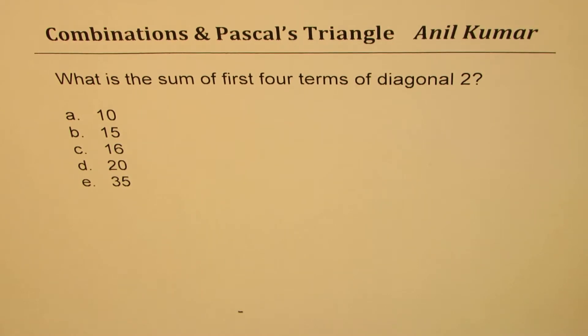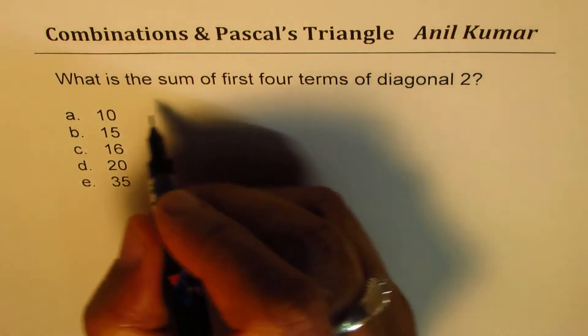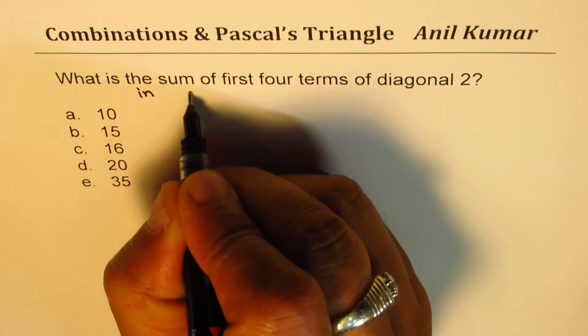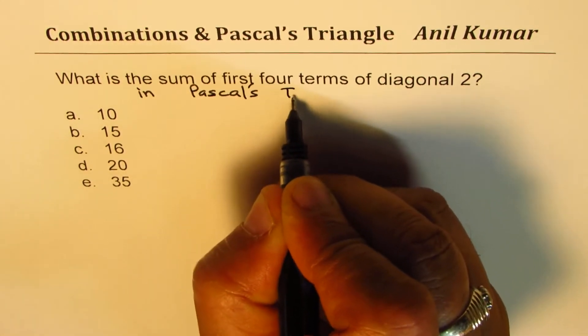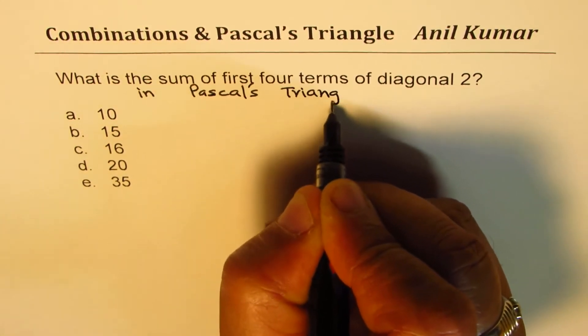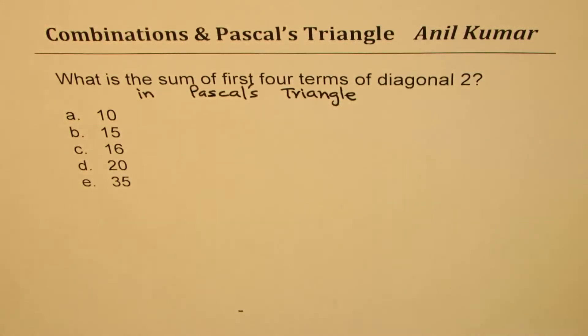The question here is: what is the sum of first four terms of diagonal 2? I should have written in Pascal's triangle - in Pascal's triangle, right. So this question is with reference to Pascal's triangle. I forgot to type it in.